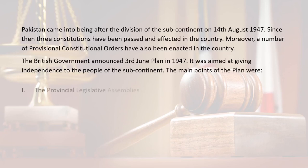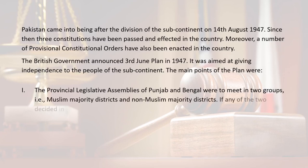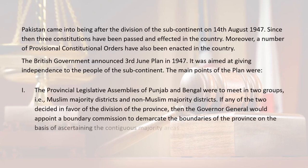Number one: the provincial legislative assemblies of Punjab and Bengal were to meet in two groups — Muslim majority districts and non-Muslim majority districts. If any of the two decided in favor of the division of the province, then the Governor General would appoint a boundary commission to demarcate the boundaries of the province on the basis of ascertaining the contiguous majority areas of Muslims and non-Muslims.